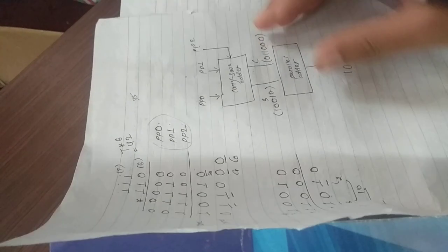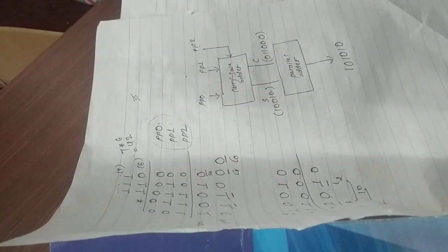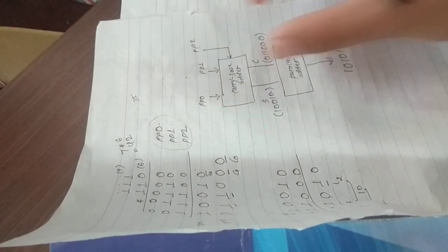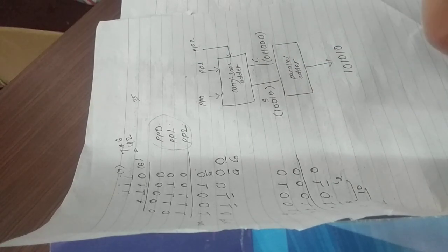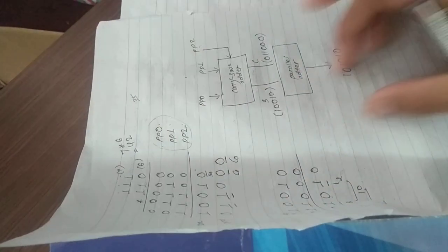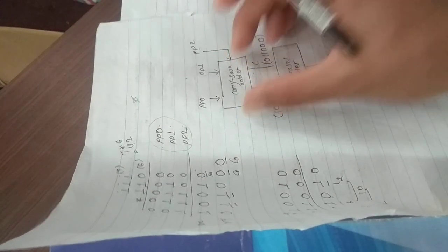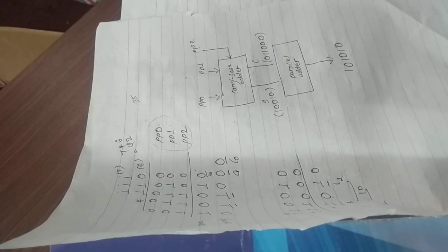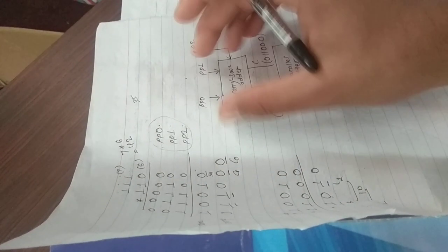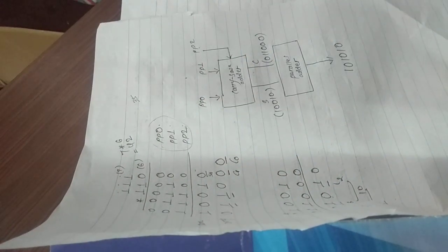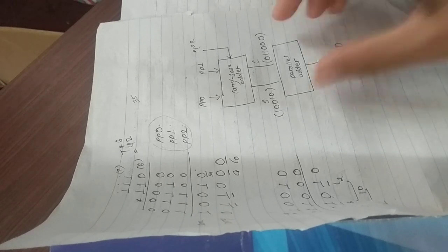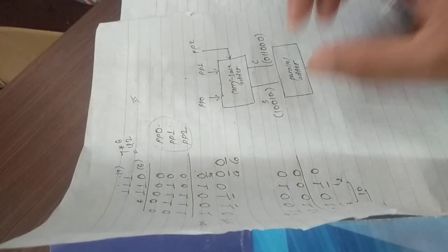What is the Wallace Tree? The Wallace Tree is the use of the Carry Save Adder and the use of the Parallel Adder. This is the Wallace Tree structure — using the Carry Save Adder to add numbers.